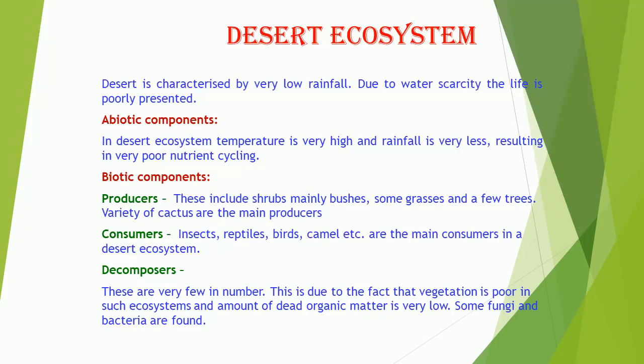Biotic Components. Producers: These include shrubs, mainly bushes, some grasses, and a few trees. A variety of cacti are the main producers in a desert ecosystem.